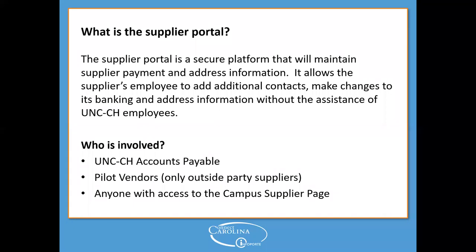So what is the supplier portal? The supplier portal is a secure platform that will maintain suppliers' payment and address information. It allows a supplier employee to add additional contacts and make changes to their banking and address information without the assistance of UNC CH employees. This is a university-wide project being led by UNC CH Accounts Payable. At this time the pilot is being conducted with selected suppliers classified as outside party suppliers. Anyone with access to the campus supplier page in Connect Carolina should take note of these changes that are soon to come.